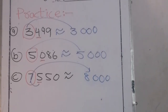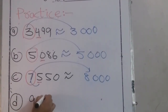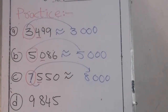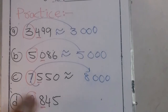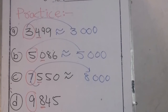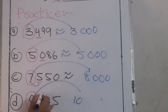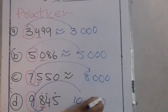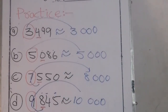Part D: 9,845. There are two steps for solving the question. First, circle the digit at the 1000 place and underline the digit at the 100 place — in other words, the digit next to the circled digit. The underlined digit is a strong number, so it pushes up 9. The 9 becomes 10, and we write three zeros after the circled digit. So 9,845 becomes 10,000.